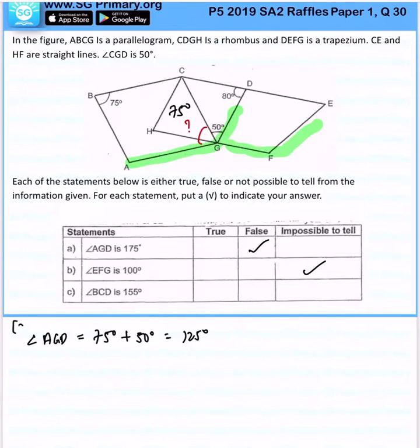Now, the last one. Angle BCD is 155. So let's look at angle BCD. Angle BCD is over here.